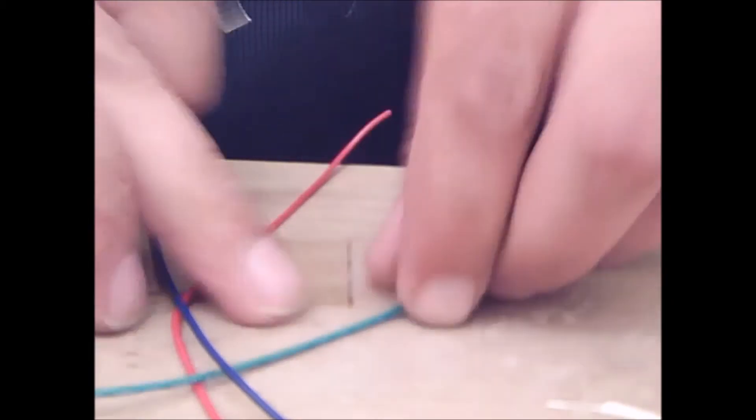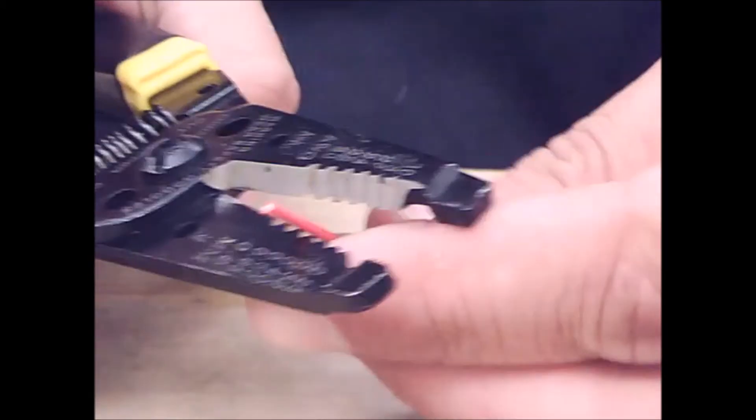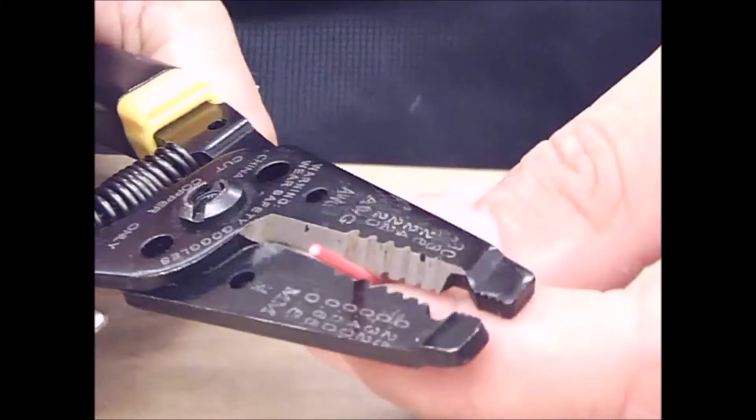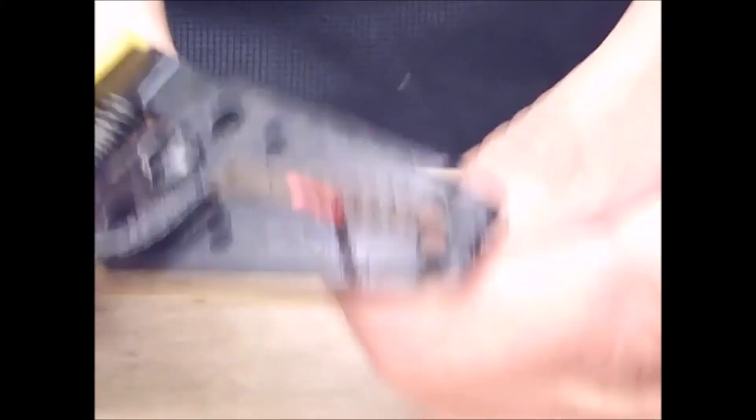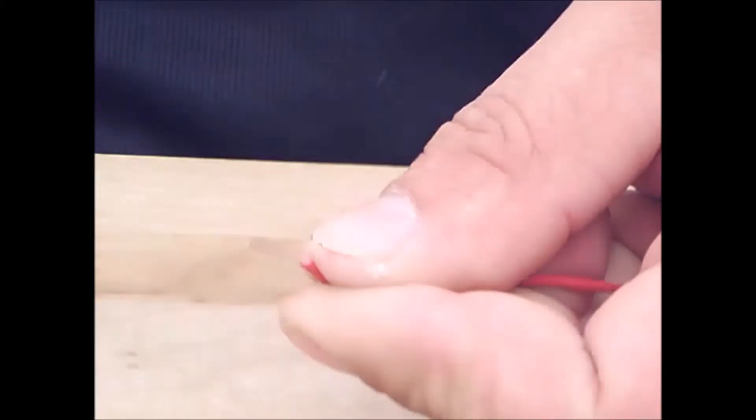All right, we stripped off about seven or eight millimeters. That'll give us a good adhesion for a solder job. Now I'm going to go ahead and prepare the red wire as well. Wiggle it back and forth and then it comes right off.